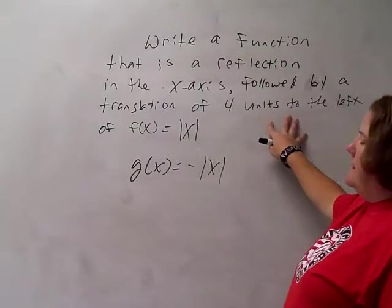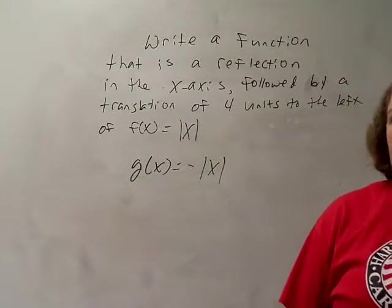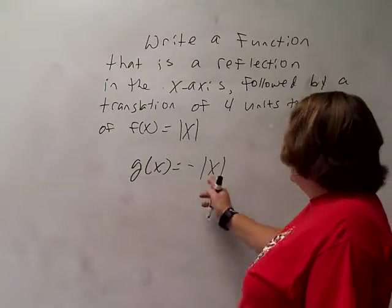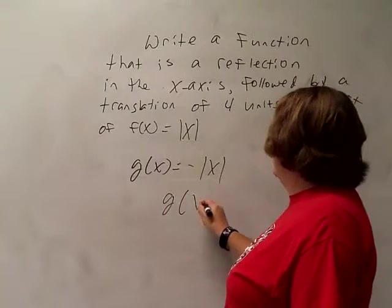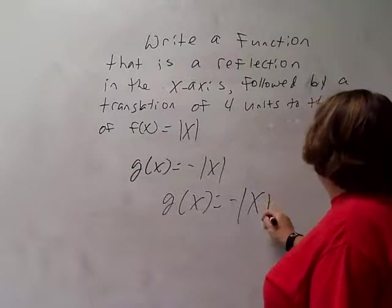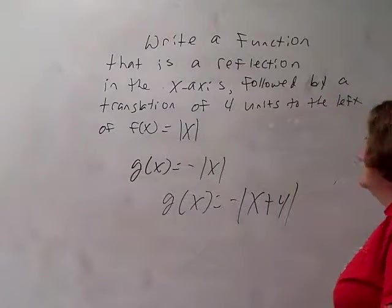Second move is four units to the left. Remember, horizontal transformations (right and left) always use the opposite sign, so left is actually going to be plus four, and when it's horizontal, it goes inside the bars. So g(x) = -|x + 4|. That's it.